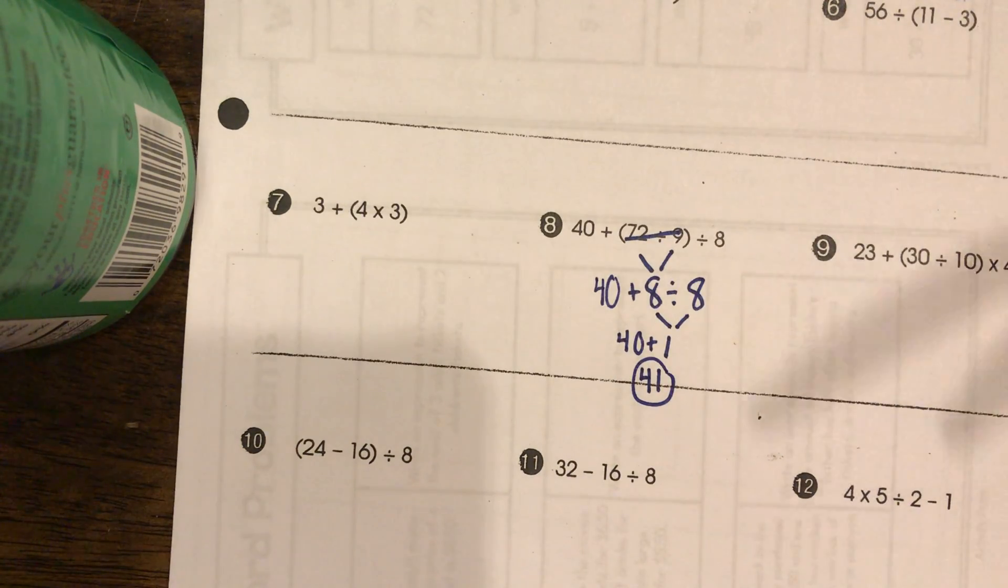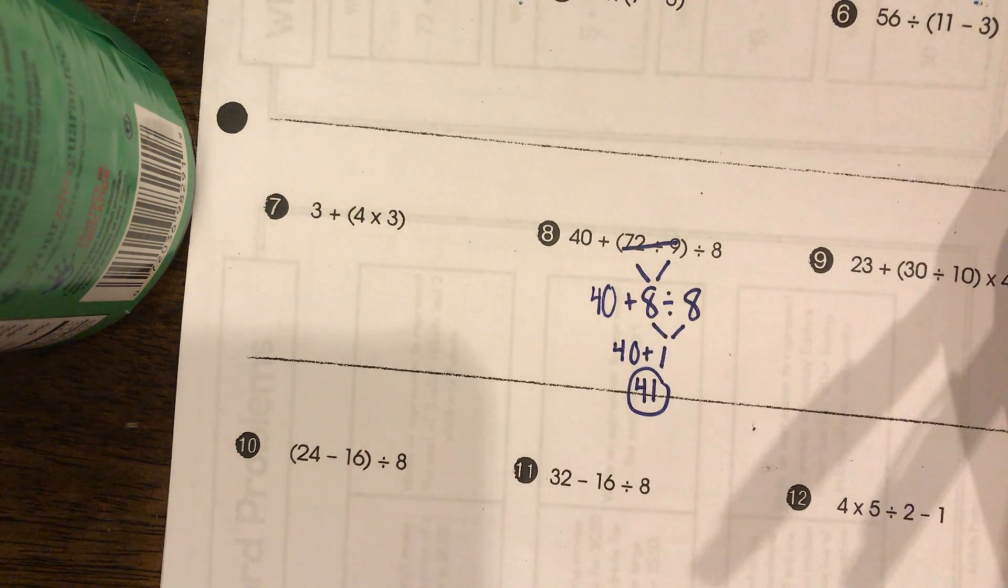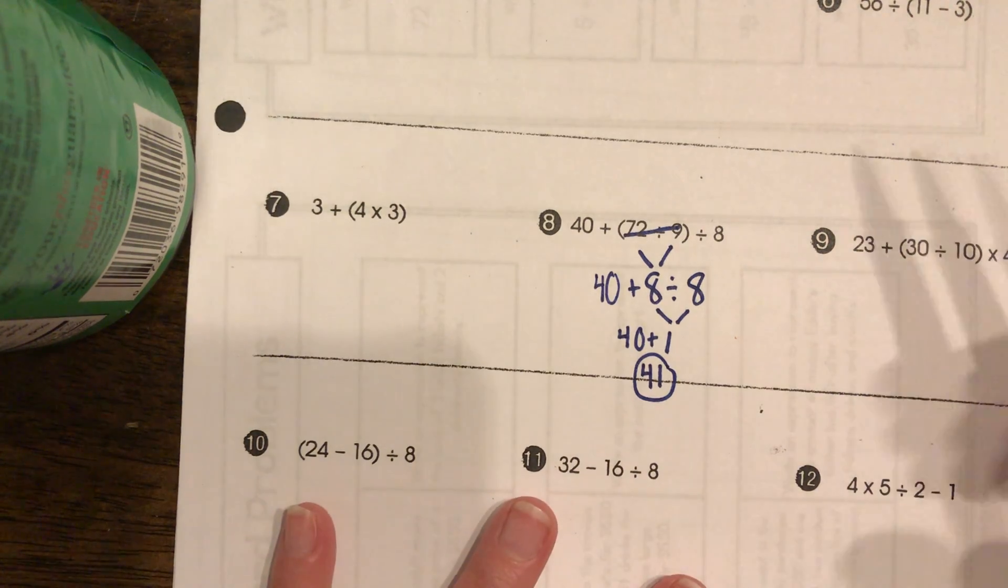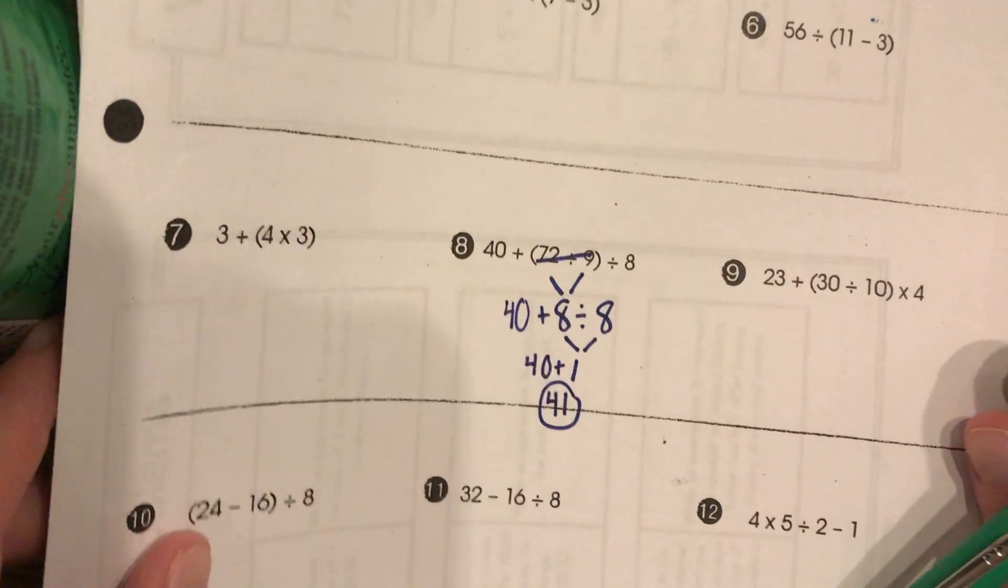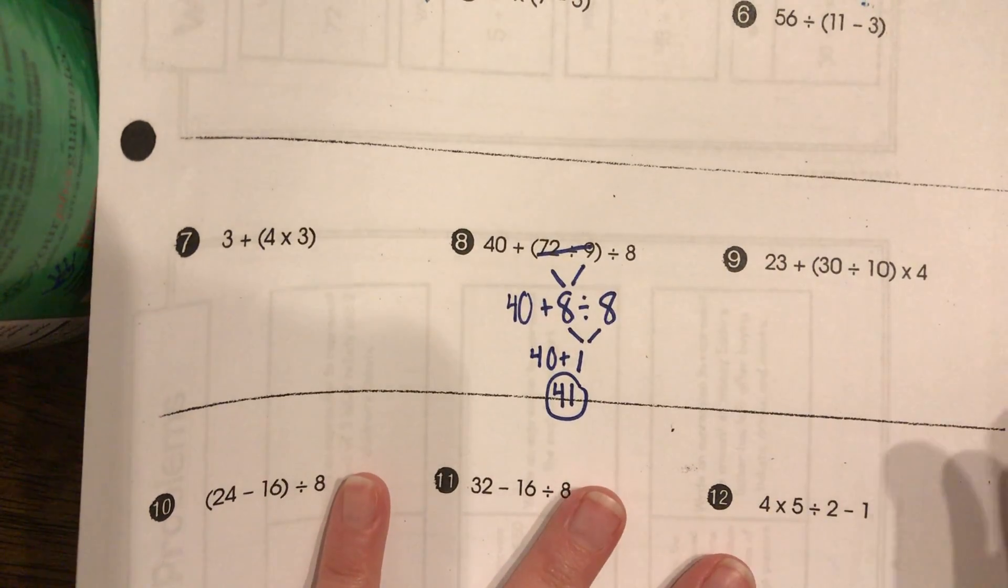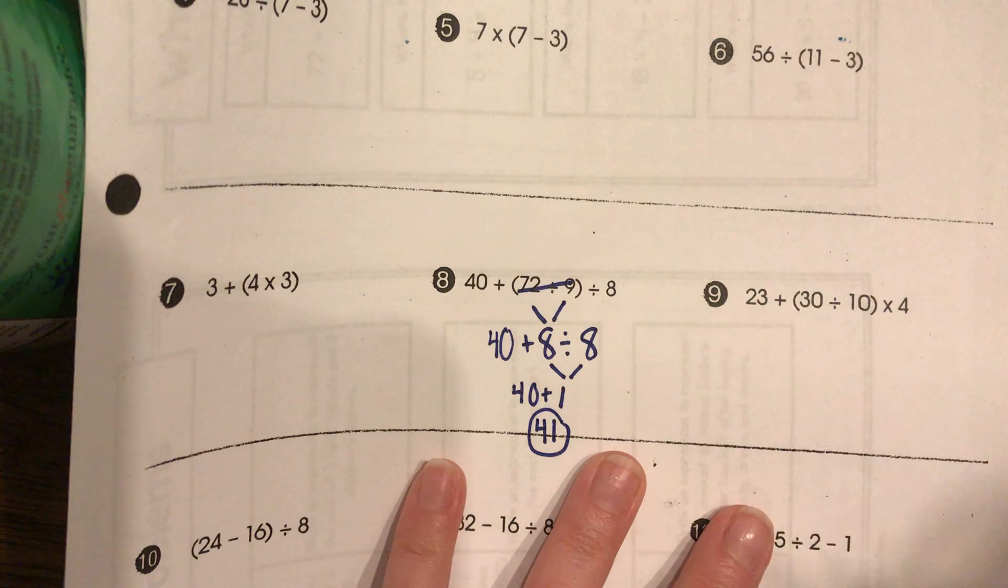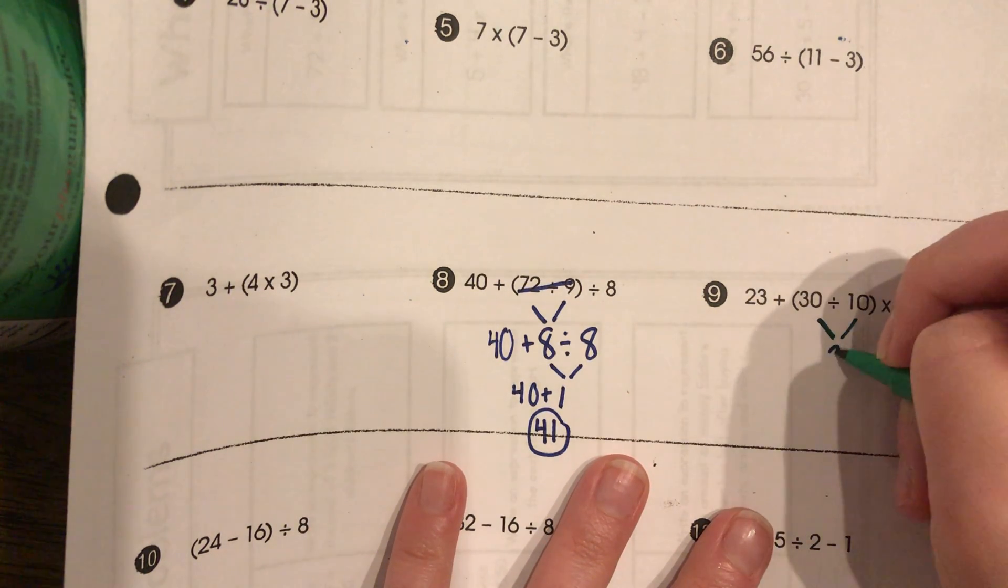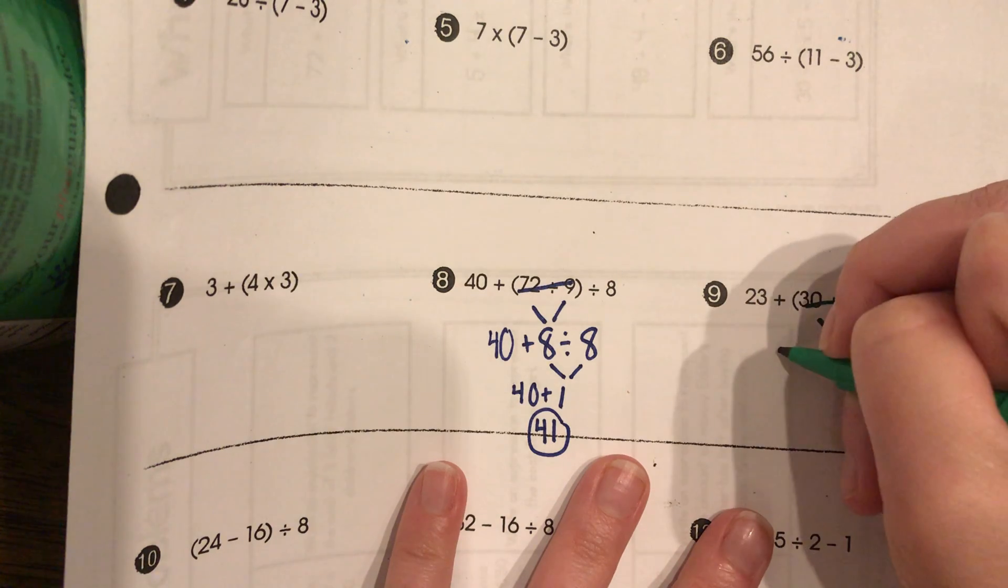Let's do one more down here, and then I'm going to let you finish up the rest by yourself. Let's look at number nine. Let me make sure you guys can see it. I'll slide it over just like this. First, obviously, is the parentheses. So, 30 divided by 10 is 3. Cross that out and write the rest of the problem. 23 plus 3 times 4.